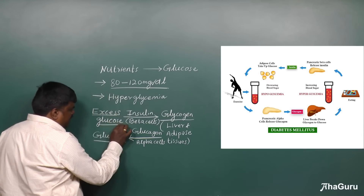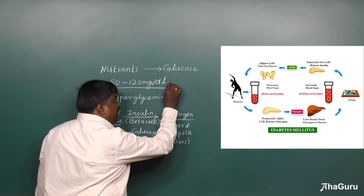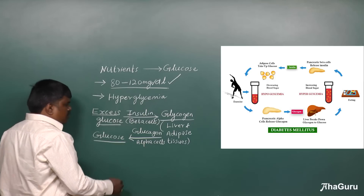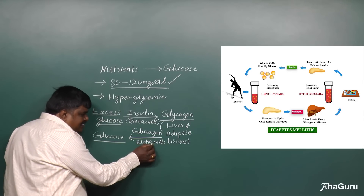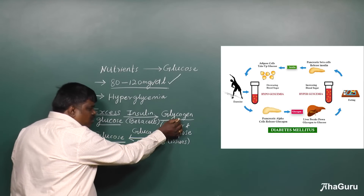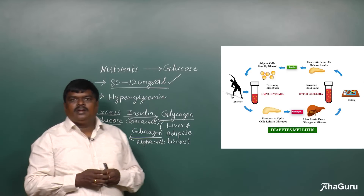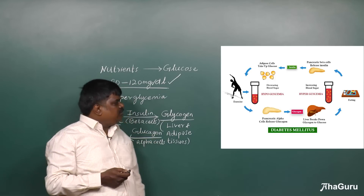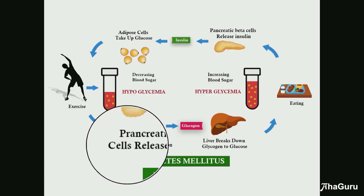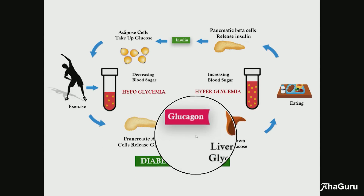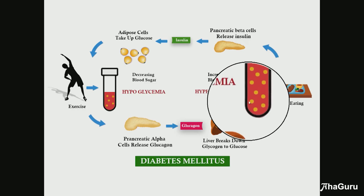Thereby the glucose level is maintained. Whenever excess glucose is there, insulin from the beta cells of the pancreas converts it into glycogen and maintains the normal blood glucose level. Whenever the blood glucose level is low, glucagon — a hormone from the alpha cells of the pancreas — converts the glycogen stored in the liver, muscles, and adipose tissues into glucose, thereby maintaining the normal blood glucose level. You can see this in a diagrammatic representation here: whenever blood glucose is low, the alpha cells secrete glucagon, which breaks down the glycogen in the liver into glucose, and it returns to normal.